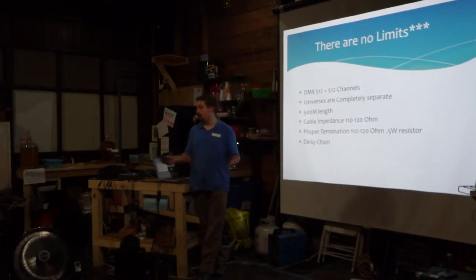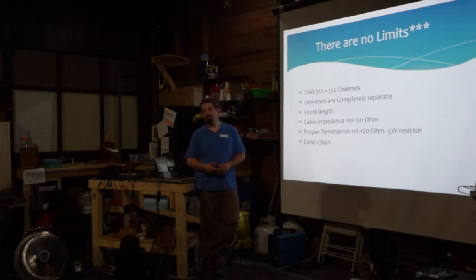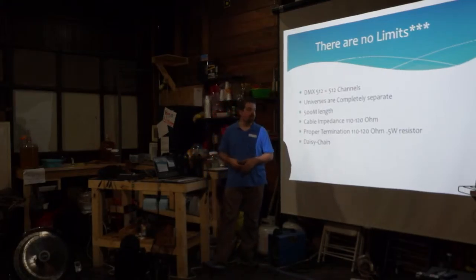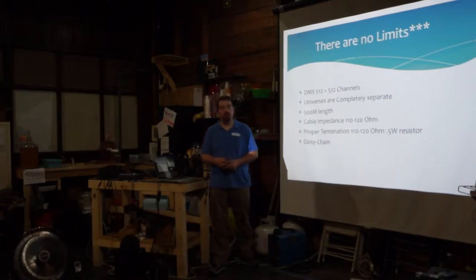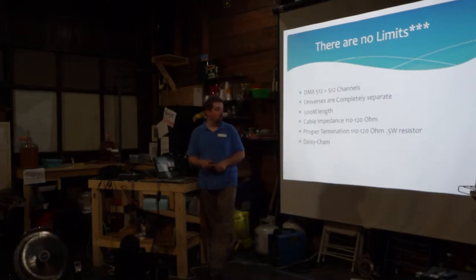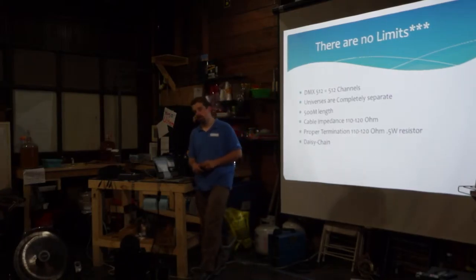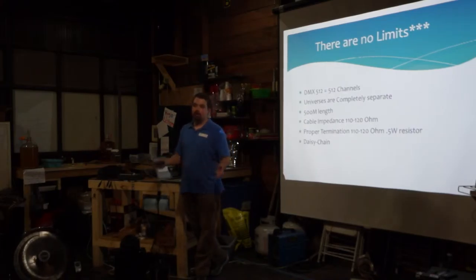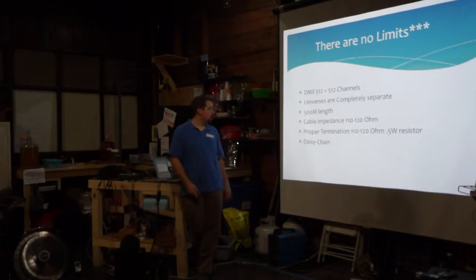500 meters is much longer than most runs. It's a daisy chain connection. Line impedance is around 110 to 120 ohms. At the end of a chain, the standard requires you to put a 110 to 120 ohm terminating resistor on the data lines. The reason you need that is to prevent signal reflection. On short lines, you don't have to worry about that. This is a daisy chain connection.